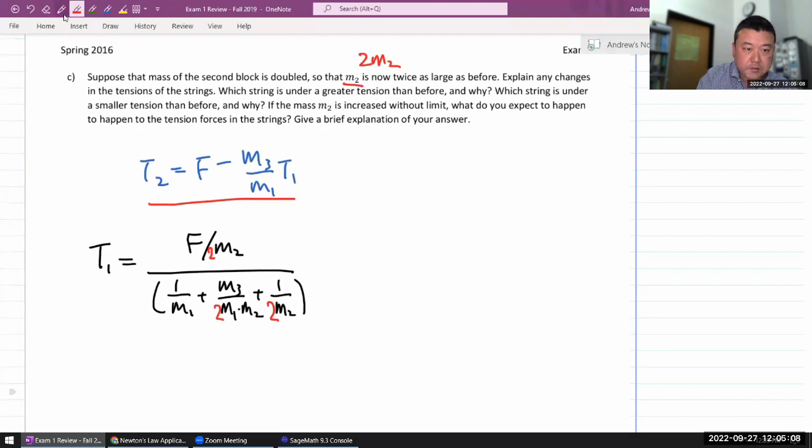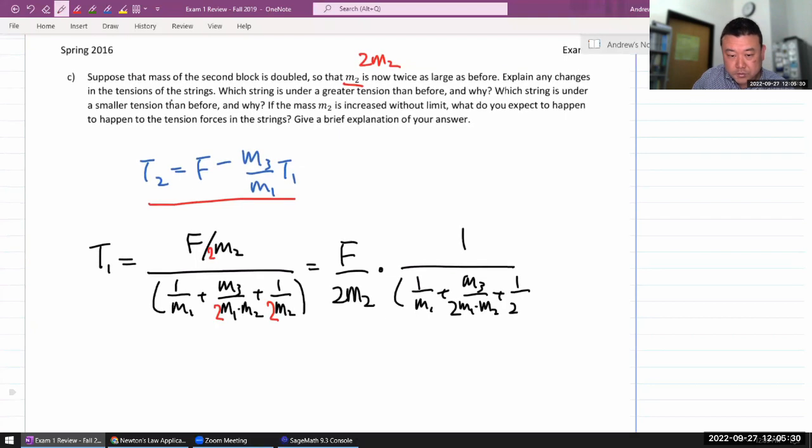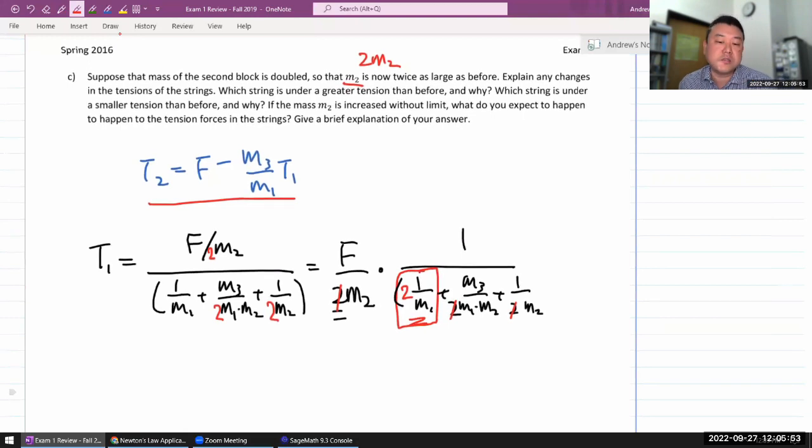So I think that's enough for me to think through. All these nested fractions are annoying me. So I'm going to do F over 2 M2 times 1 over 1 over M1 plus M3 over M1 times 2 M2 plus 1 over 2 M2. You can distribute this 2 in. Then what happens is that you have this factor of 2 here, and these other 2s cancel. So the effect of changing M2 into 2 M2 is actually this one. All other terms remain the same. One of the positive terms in the denominator increases. So the overall effect of that on T1 is that T1 will actually decrease.